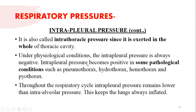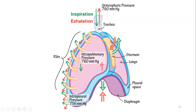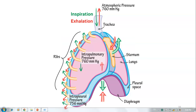In pathological conditions, intrapleural pressure becomes positive, such as in pneumonia, pneumothorax, hydrothorax, hemothorax, or pyothorax. Intraalveolar pressure — also called intrapulmonary pressure — is normally equal to atmospheric pressure, which is 760 mmHg. The intrapleural pressure is negative at 756 mmHg, giving a difference of minus 4 mmHg compared to atmospheric pressure.